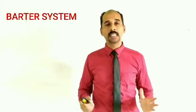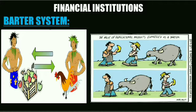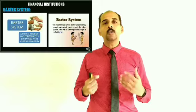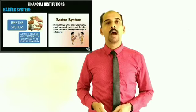Next we can see some pictures here — two pictures. In one picture, one person is trying to exchange his chicken with some fruits. In the next picture, a person is trying to exchange his banana with a cow. The activity of exchanging one good for another, or one product for another, is called the barter system.